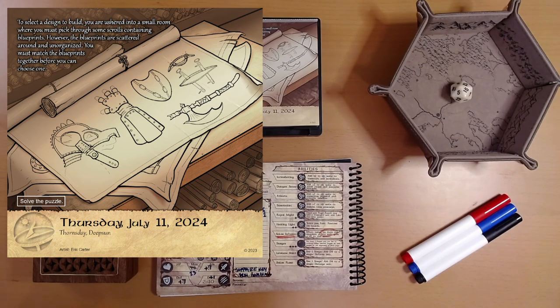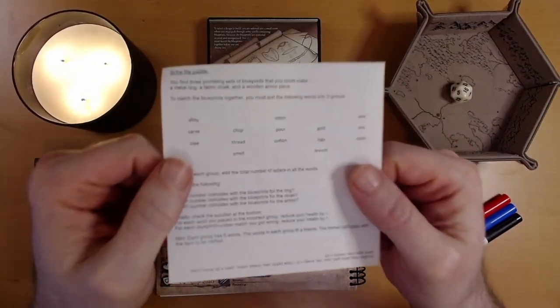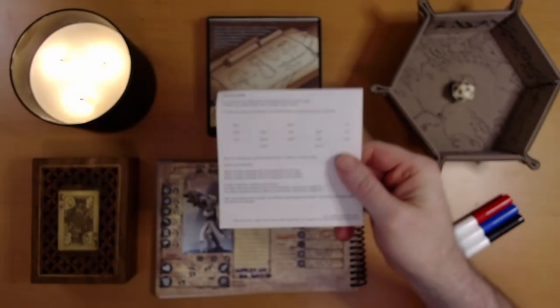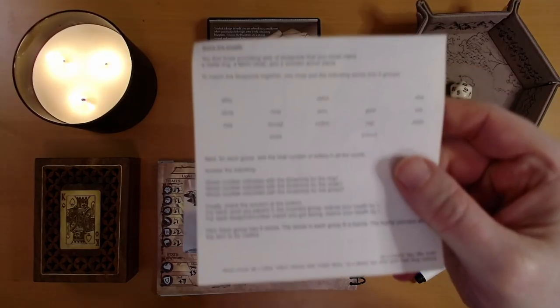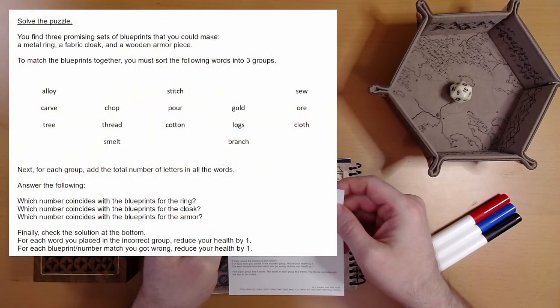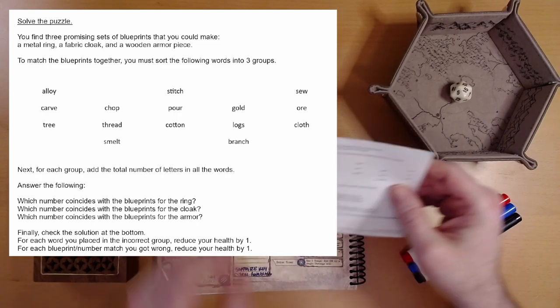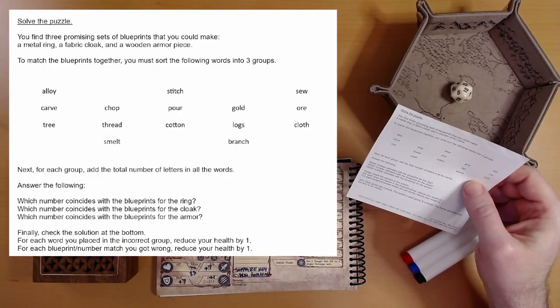To select a design to build, you are ushered into a small room where you must pick through some scrolls containing blueprints. However, the blueprints are scattered around and unorganized. You must match the blueprints together before you can choose one. You find three promising sets of blueprints that you can make: a metal ring, a fabric cloak, and a wooden armor piece. To match the blueprints together, you must sort the following words into three groups.